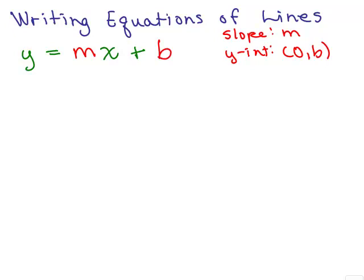We're going to go over how to write equations of lines if you're given some information about the line. One form of a line is the slope-intercept method, y equals mx plus b, where m is the slope and b is the y-intercept. So if you know the slope and you know the y-intercept, you should be able to write the equation of the line by plugging in values for m and b.